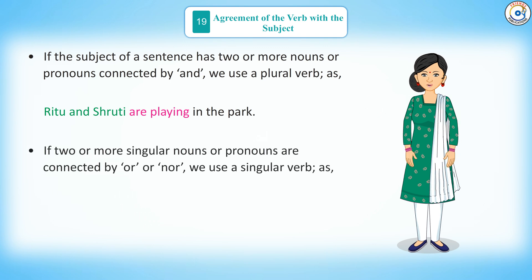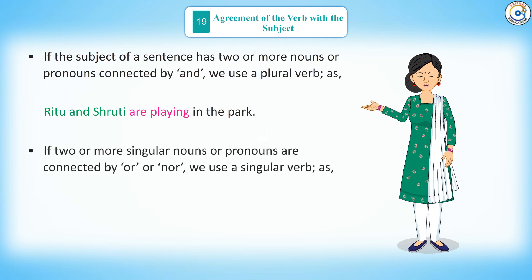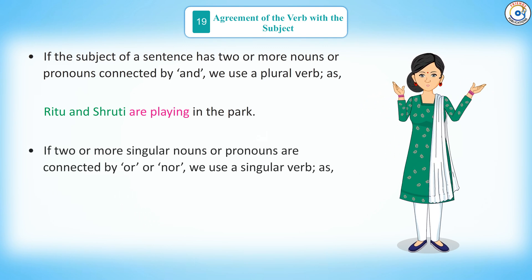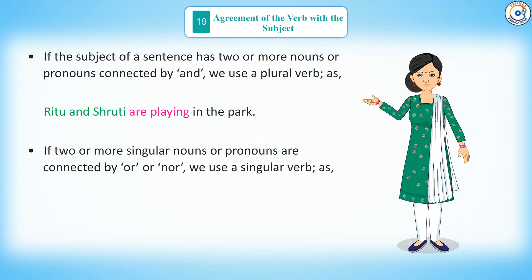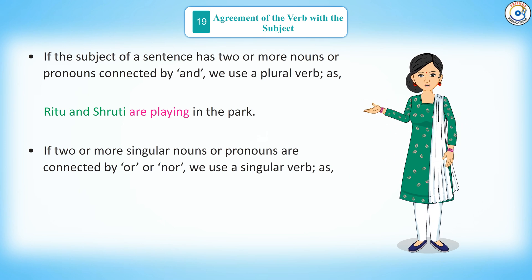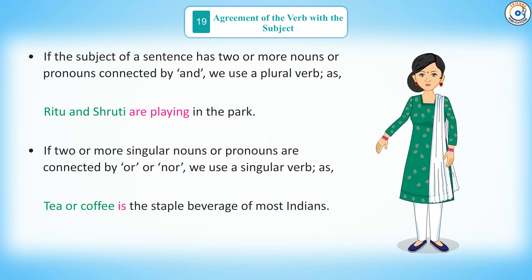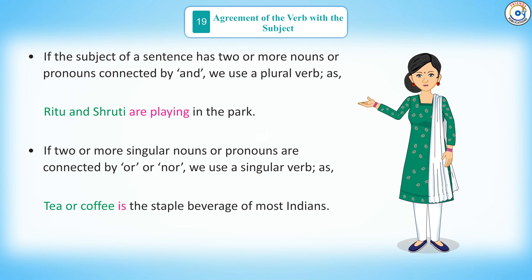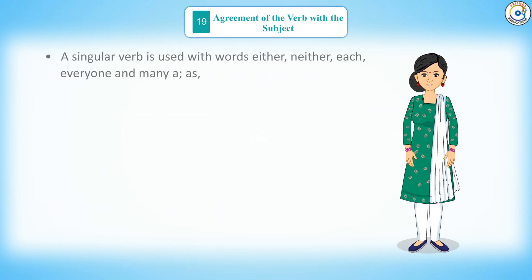Rule 3: if two or more singular nouns or pronouns are connected by 'or' or 'nor', we use a singular verb — as in, tea or coffee is the staple beverage of most Indians.